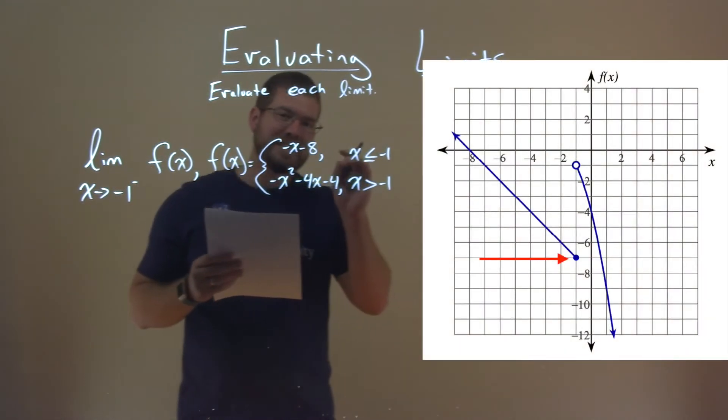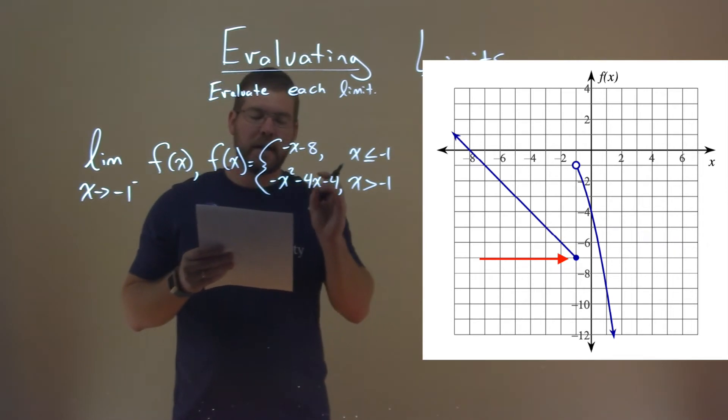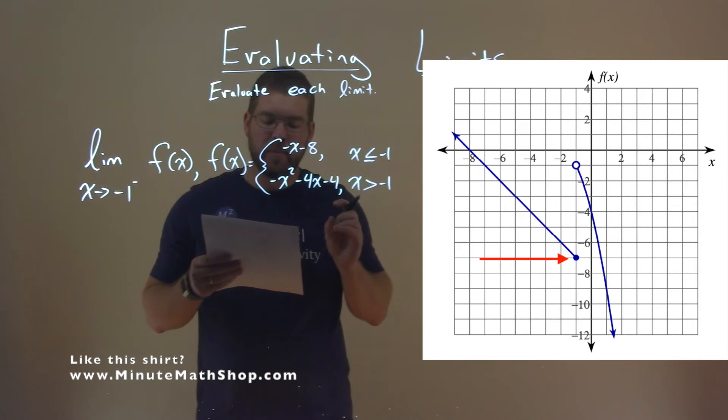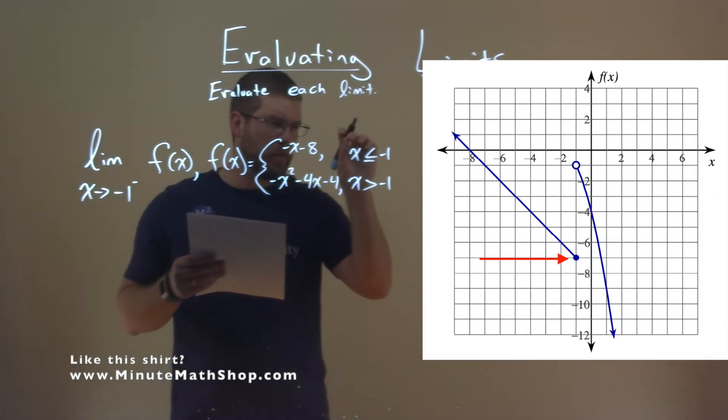And we see the equation that's going downwards. So we're approaching negative 1 from the left, and the equation's slipping downwards, and it actually hits that point right there. We see the point goes down.